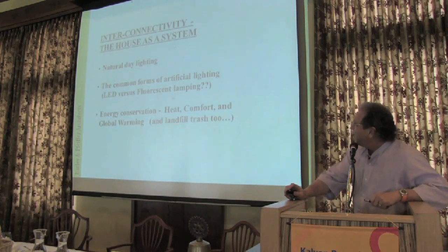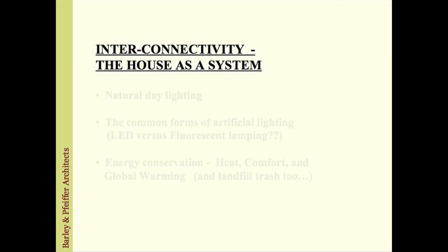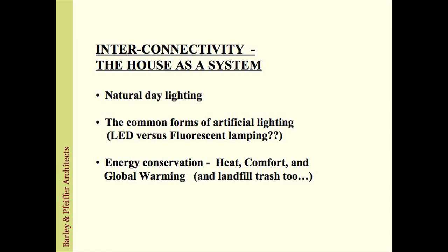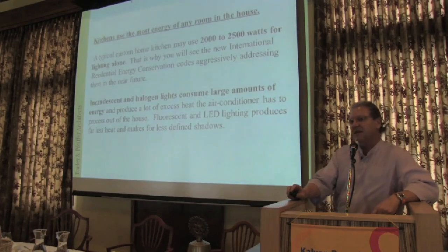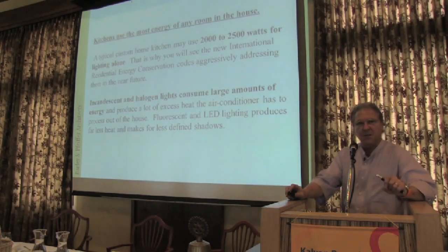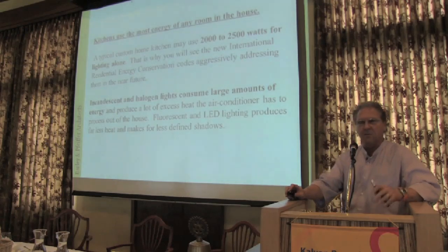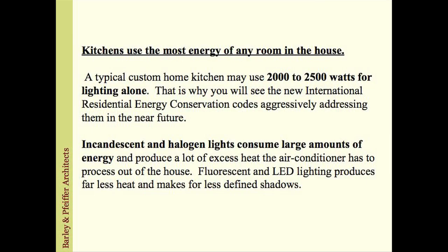Let's wrap up with this interconnectivity discussion — natural daylighting, common forms of artificial lighting, and how it all relates to energy conservation, comfort, and global warming. The kitchen uses the most energy of any room in the house. It's not unusual to spend 2,000 to 2,500 watts lighting your kitchen at night when you're making dinner, particularly with halogen lamps and under-cabinet lights.